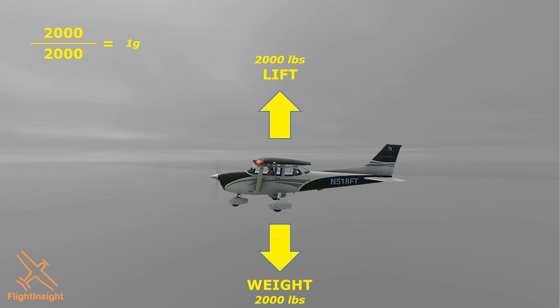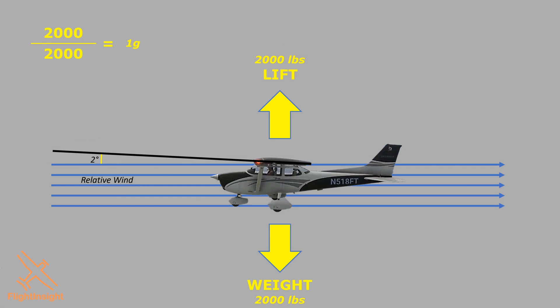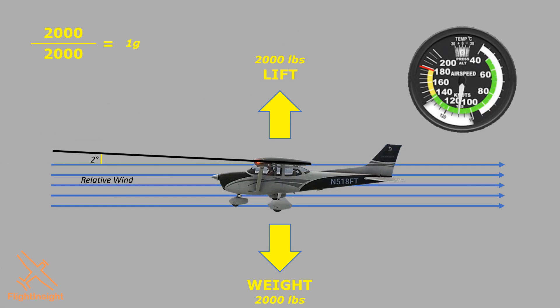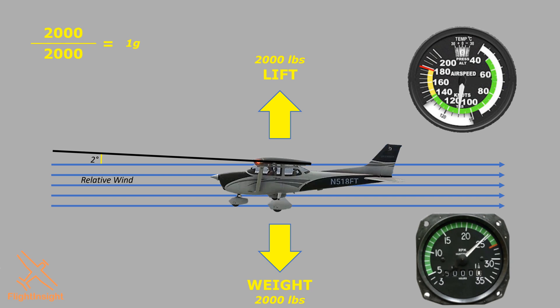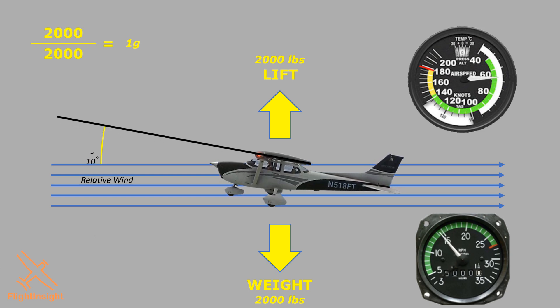In order to generate enough lift to maintain equilibrium, we have to fly at a certain angle of attack at a certain airspeed — recall the lift equation for how these factors interact. Angle of attack is the angle made by the relative wind and the chord line of our wing; let's say here it's 2 degrees, requiring about 110 knots at a relatively high cruise power setting. If we want to slow down, we'll trade airspeed for a higher angle of attack. Reducing power and pitching up enters slow flight — now at a 10-degree angle of attack but slower. Lift hasn't changed, so our load factor stays at 1G.